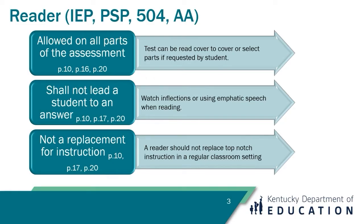Readers of multiple varieties are available on state testing. Each individual test will have literature that guides you on how each reader is to be provided within the testing environment. Text-to-speech is allowed for students with an IEP, 504, and PSP. A reader can read everything from cover to cover in the assessment to the student. If the student requests to read parts independently, that is allowed and the proctor must stop reading until the student requests it again. All students have the right to grade instruction, so giving an accommodation does not relieve the teacher, school, or district of the responsibility of giving the student top-notch instruction.